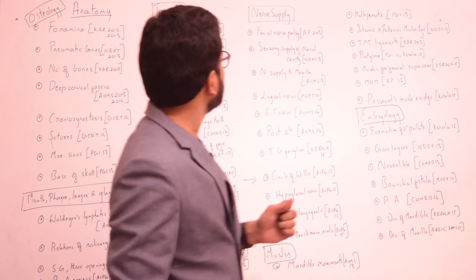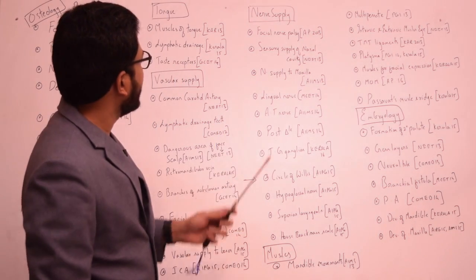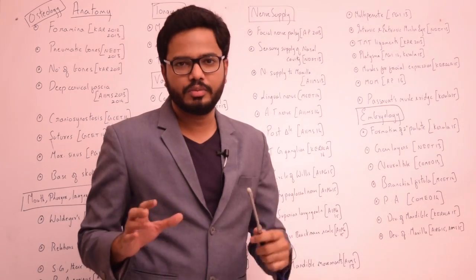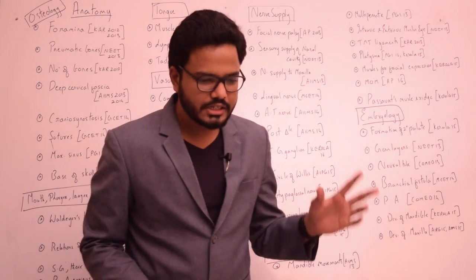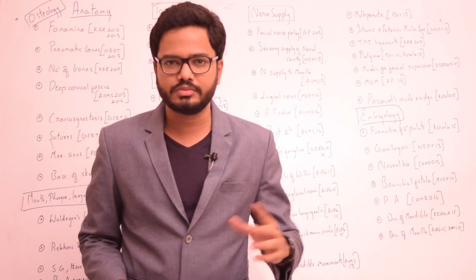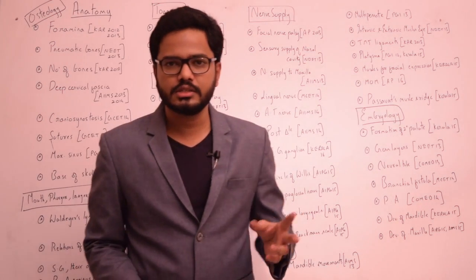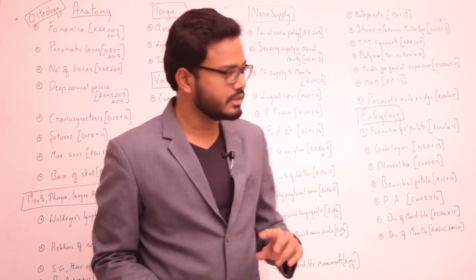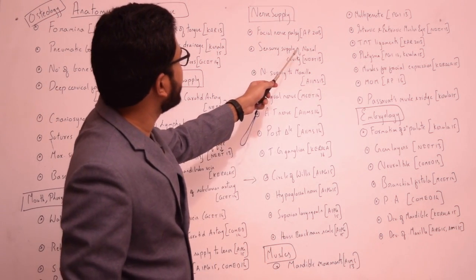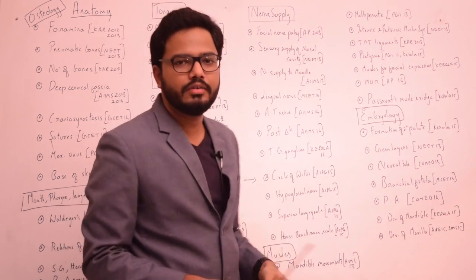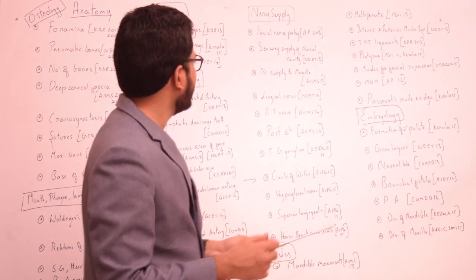Moving on to nerve supply of head and neck. We have various questions from the clinical aspects — various questions related to lesions, especially facial nerve lesions, facial nerve palsies, lower motor neuron lesions, upper motor neuron lesions, etc. And also questions from the sensory supply of the nasal cavity; the lateral wall of the nose is considered to be a very important topic.